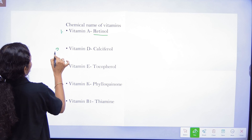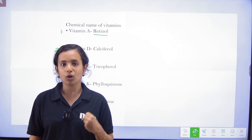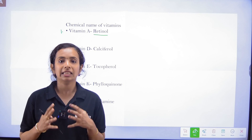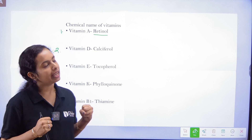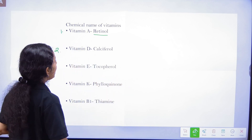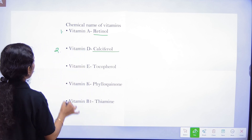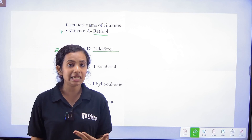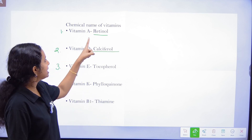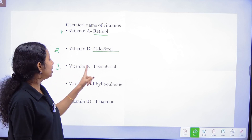Vitamin D's chemical name is Calciferol. Vitamin E's chemical name is Tocopherol. So far: Retinol is Vitamin A, Calciferol is Vitamin D, Tocopherol is Vitamin E.